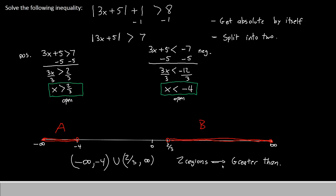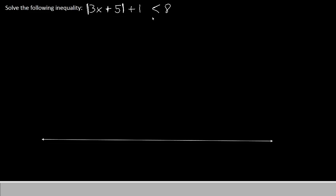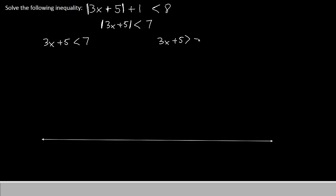Now, what if we had less than instead? We'll have a look at that example as well using the same equation, except the sign is now less than. Let's repeat the process: get the absolute value sign by itself — we already know that will be less than 7. We'll split it into two inequalities. The first inequality is 3x plus 5 less than 7. The other one will change the sign of the inequality and the sign of the number on the right, so we'll have 3x plus 5 greater than negative 7.